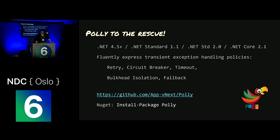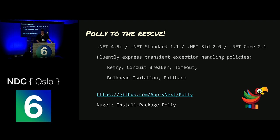Polly supports .NET 4.5 and higher, .NET Standard 1.1, Standard 2, and .NET Core 2.1. You use a fluent syntax to express these transient exception policies — and that's why Polly is called Polly. It's not because of the parrot; it's policies. These policies are just objects, and we can do all sorts of strategies like retries, circuit breakers, timeouts, bulkhead isolation, and fallback. It's on NuGet — install-package Polly — pretty simple.